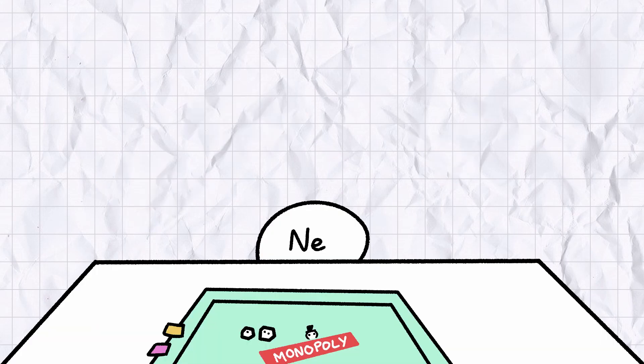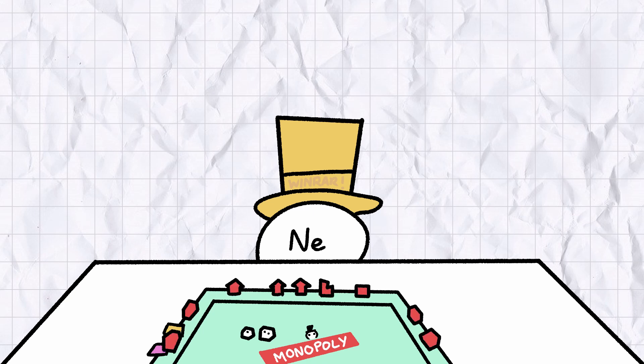In the game of chemistry monopoly, neon's already won. It's bought all the properties, mortgaged all the houses, and used the proceeds to make a little sparkly dog collar out of blood diamonds and Fabergé eggs.